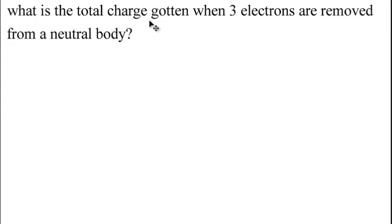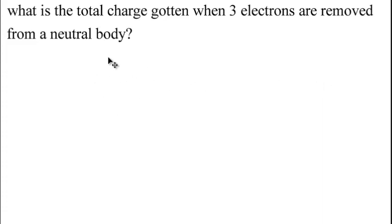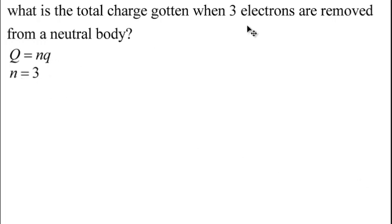Question: What is the total charge gotten when 3 electrons are removed from a neutral body? Three electrons being removed from a neutral body will make that body become positive — once you lose electrons, you have more positive charges. We are looking for the total charge, which should be positive. Using the formula Q = N × e, we have N = 3.